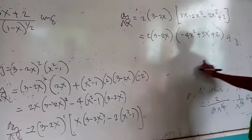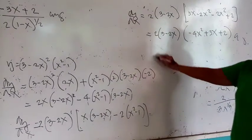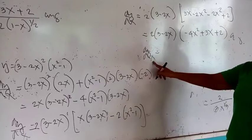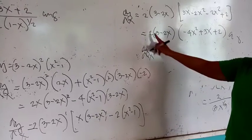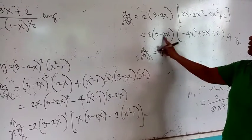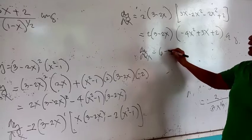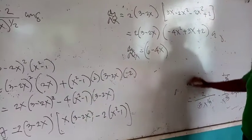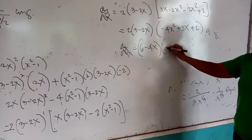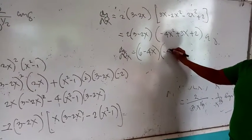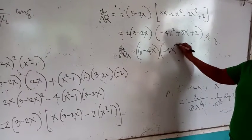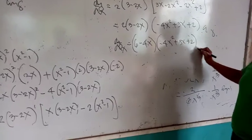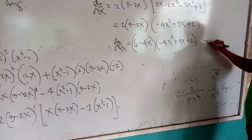Or if you want to continue with the algebra, the derivative of y with respect to x — multiply: that would be 6, multiply that would be minus 4x, then that would be negative 4x squared plus 3x plus 2. That is your final answer.